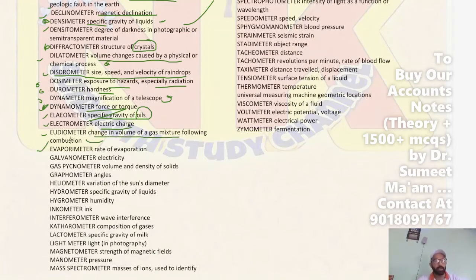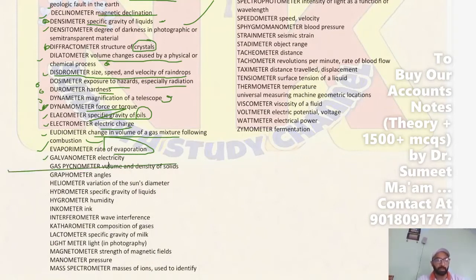Next, Evaporimeter measures the rate of evaporation. Next, Galvanometer — this is most important — Galvanometer measures electricity. Next, Gas Pycnometer measures the volume and density of solids. Next, Graphometer measures angles.